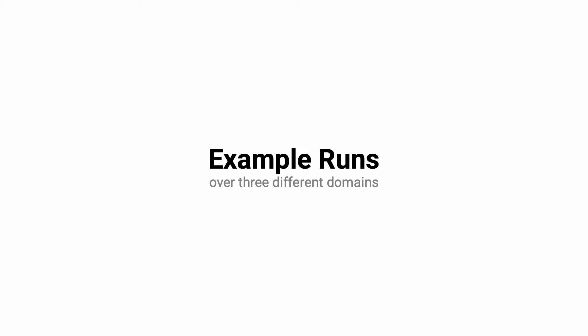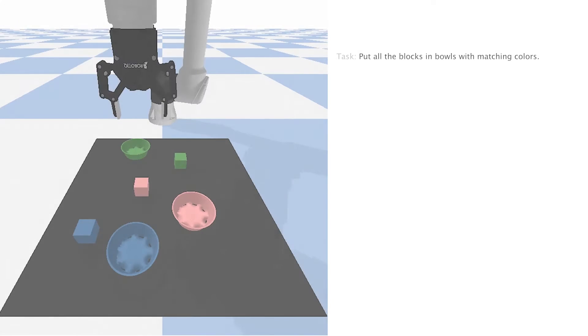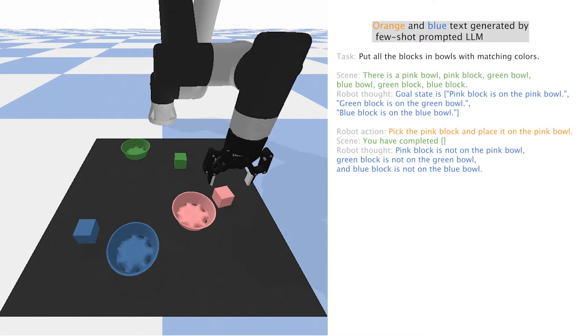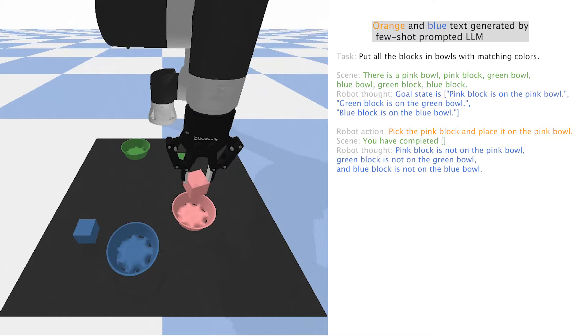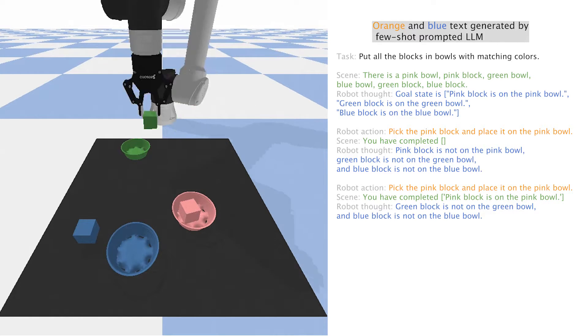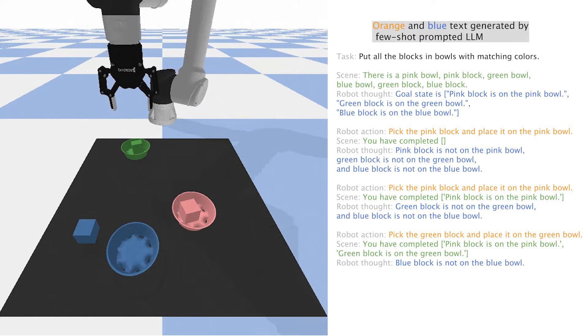Here are some example runs of the proposed method. In the simulated domain, the task is to put all the blocks in the bowls with matching colors. Notice that the policy fails to place the pink block during the first time, but quickly retries and succeeds the second time.